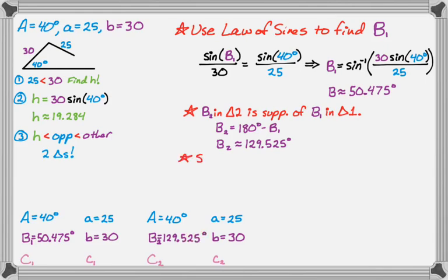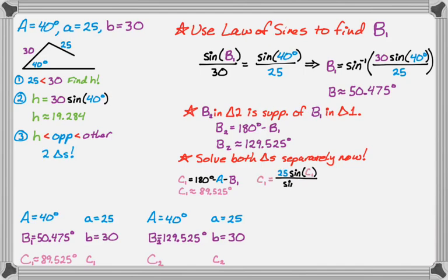From here, we solve both of the triangles as if the other triangle doesn't exist. We solve them completely separately from each other. I'm going to find C sub 1 and then side C sub 1. To find angle C sub 1, I'm going to do 180 minus A minus B sub 1, and that tells me C sub 1 is about 89.525. To find side C sub 1, I'm going to use the law of sines again, but I've already multiplied it through. C sub 1 from the calculator, 38.892.